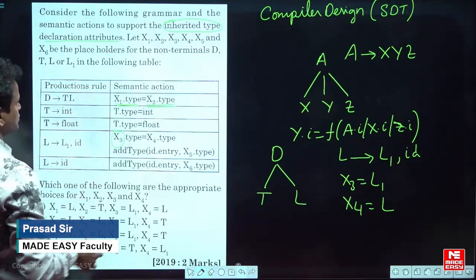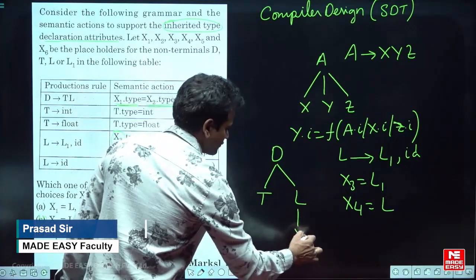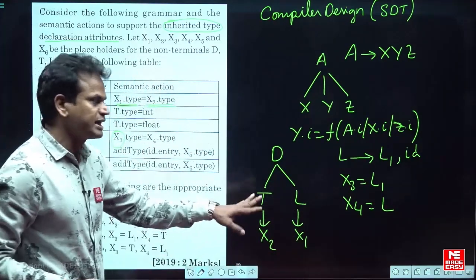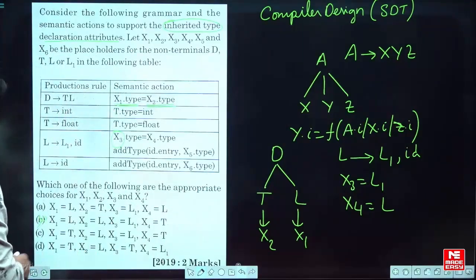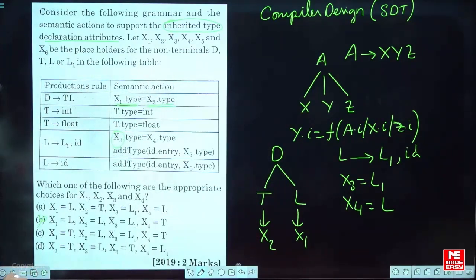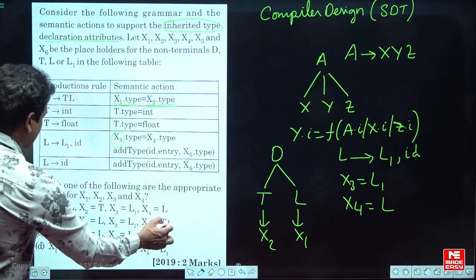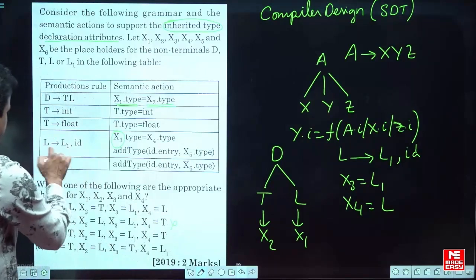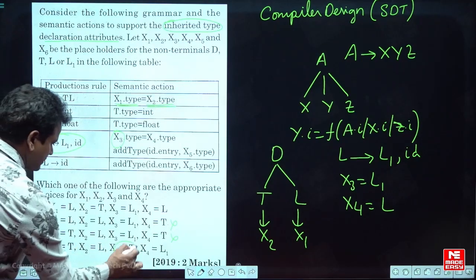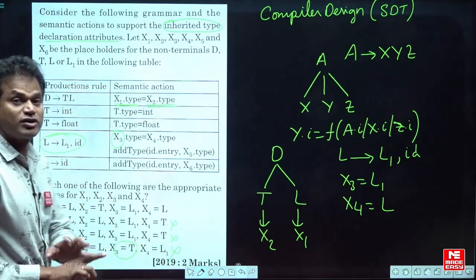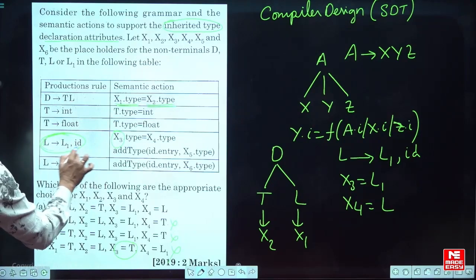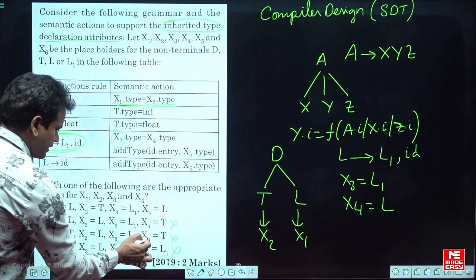In the production TL, one is x1 and the other is x2 — they can be reversed depending on the matching options. Now, x4 cannot be T because in the production L → L1, id, T is not present. So x4 cannot be T, and x3 cannot be T either. So any option where x3 or x4 is T cannot be true.